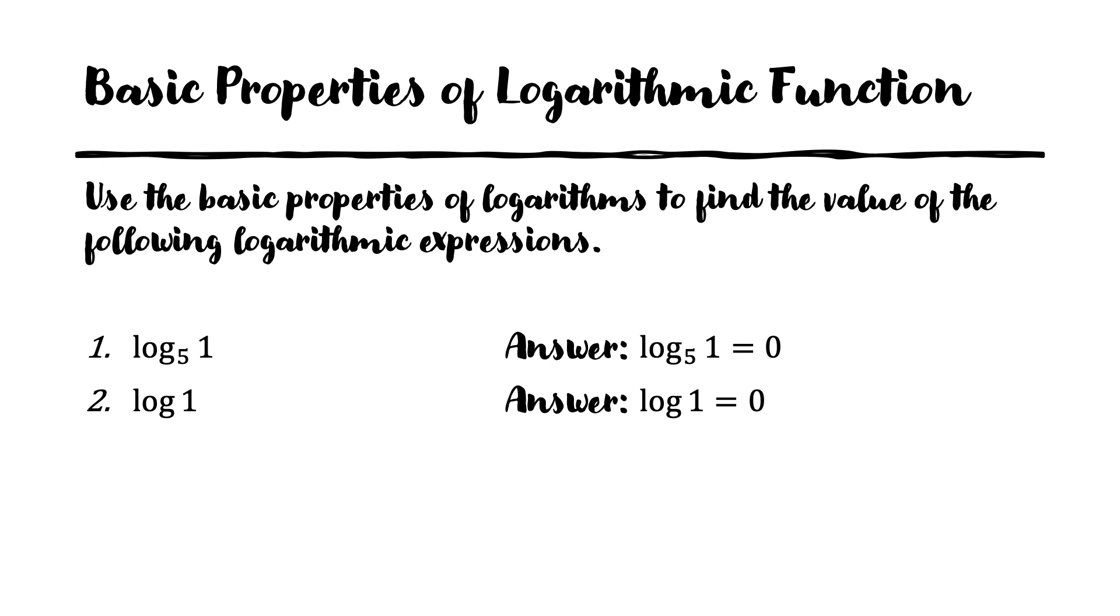Log of 125 base 5 gives us log of 5 cubed because we can write 125 as 5 cubed, and according to the second property that should equal 3.